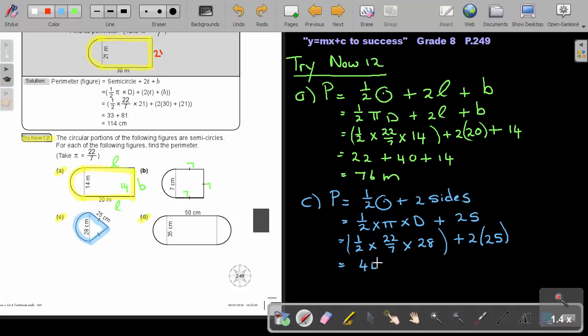And then if I just work out this, I will get 44, plus that two times 25 is 50, and if I just add it up, I will get 94 cm. And that will be my final answer. Okay.